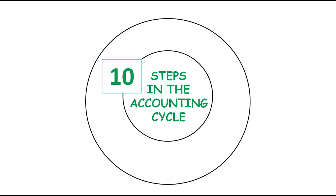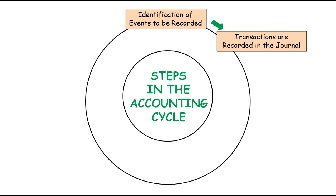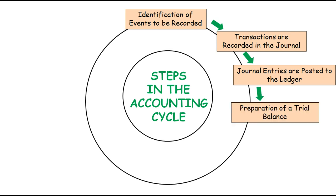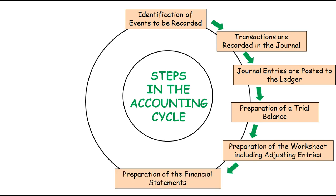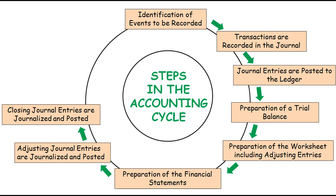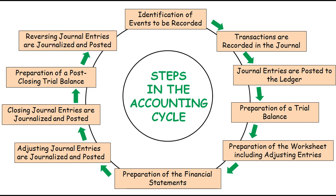Let us discuss the 10 steps in the accounting cycle. First step: identification of events to be recorded. Second: transactions are recorded in the journal. Third: journal entries are posted to the ledger. Fourth: preparation of a trial balance. Fifth: preparation of the worksheet including adjusting entries. Sixth: preparation of the financial statements. Seventh: adjusting journal entries are journalized and posted. Eighth: closing journal entries are journalized and posted. Ninth: preparation of a post-closing trial balance. And the tenth step: reversing journal entries are journalized and posted.